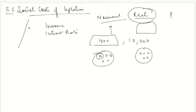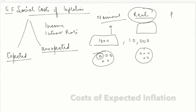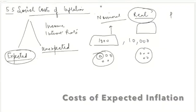We are going to understand inflation costs in two variants. First is the cost of expected inflation, and second is the cost of unexpected inflation. If inflation is expected, what can be its cost? And if inflation is unanticipated — an unexpected increase in prices — what can be the cost of that? We will start with expected inflation.